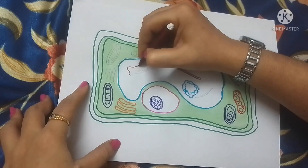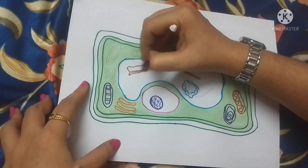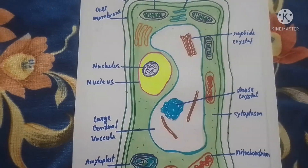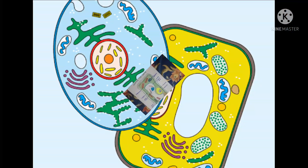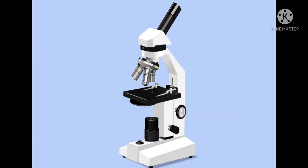To draw a perfect diagram of an animal cell or a plant cell, we have to do the labeling of all the cell organelles correctly. Most cells are between 10 and 20 micrometers across in size, so we cannot see an animal cell or a plant cell without the help of a powerful microscope.